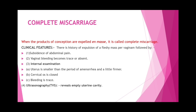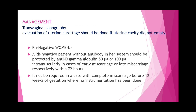On internal examination, the uterus is smaller than the period of amenorrhea and the cervical os is closed with minimal bleeding. On ultrasonography (TVS), the uterine cavity is empty, confirming complete miscarriage. Evacuation and curettage should be done if the uterine cavity is not confirmed empty by transvaginal sonography. In Rh-negative women without antibodies, anti-D gamma globulin 500 micrograms (early miscarriage: 100 micrograms) intramuscularly within 72 hours.